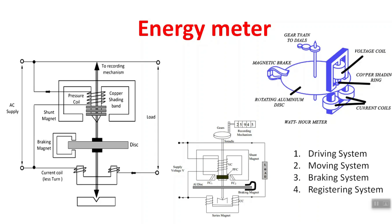Coming to the working operation: AC supply is given to the starting terminals and we connect the energy meter. When the supply is switched ON, power is delivered to the coils.